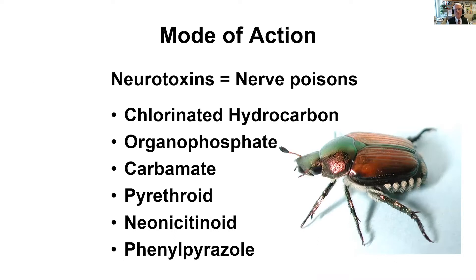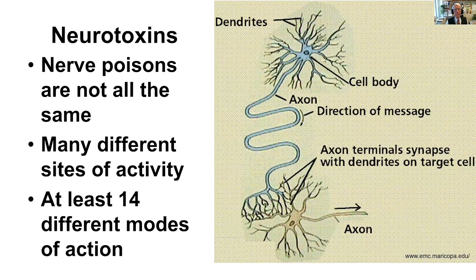They affect the nervous system of the insect. And here you can see the list of insecticides that you're familiar with. Many of the older insecticides were these nerve poisons, but some of our new ones, like the pyrethroids, the neonicotinoids, and the phenylpyrosols are also nerve poisons. But calling them nerve poisons is an oversimplification because they're not all the same — they do not all have the same mode of action.